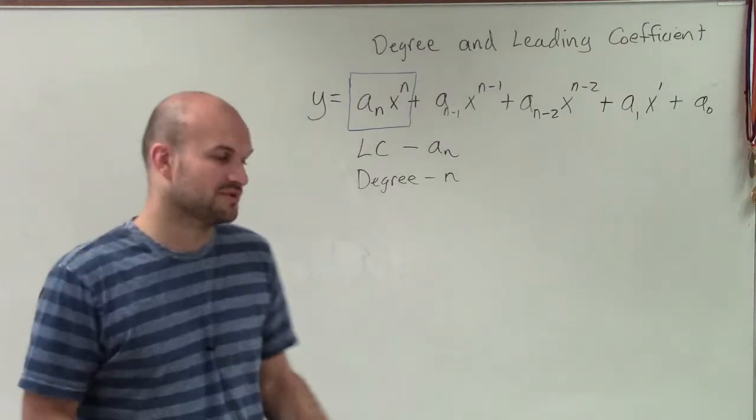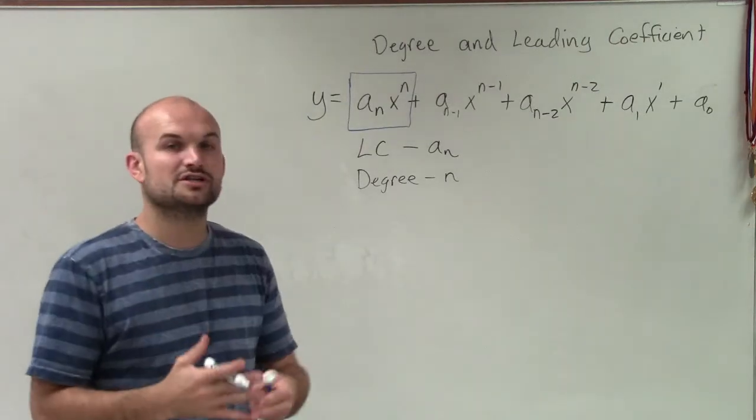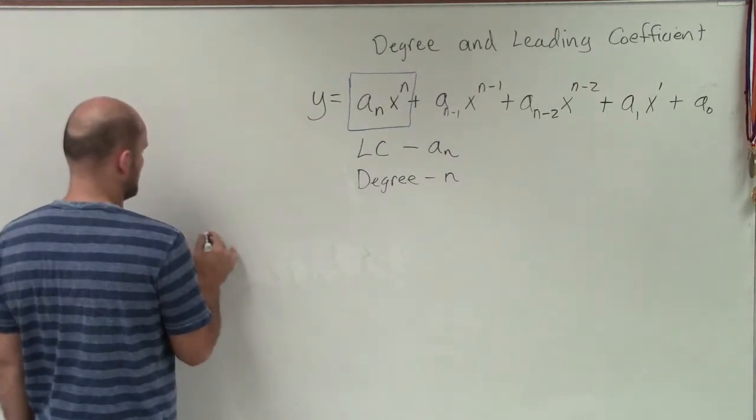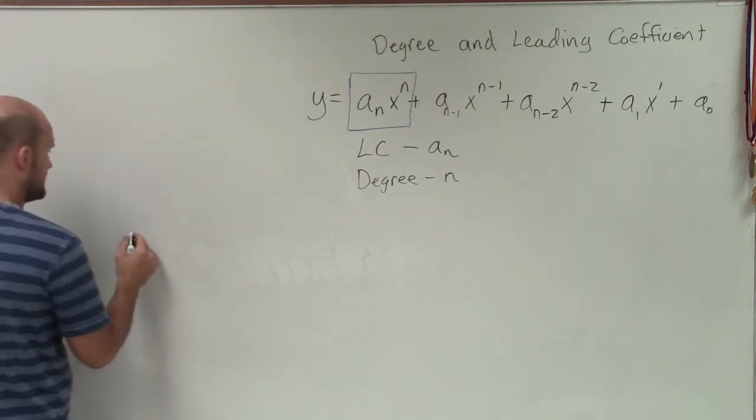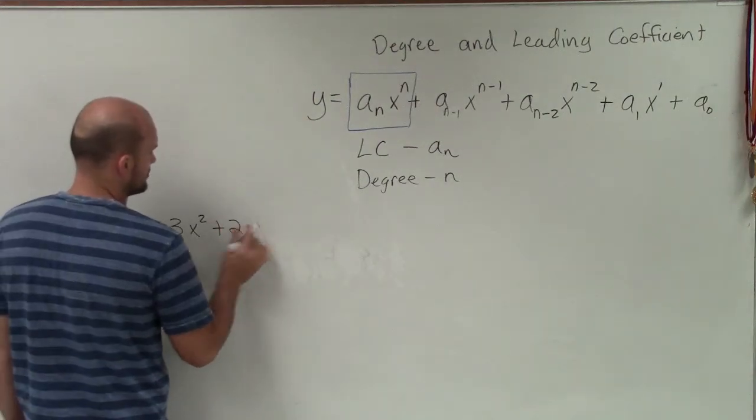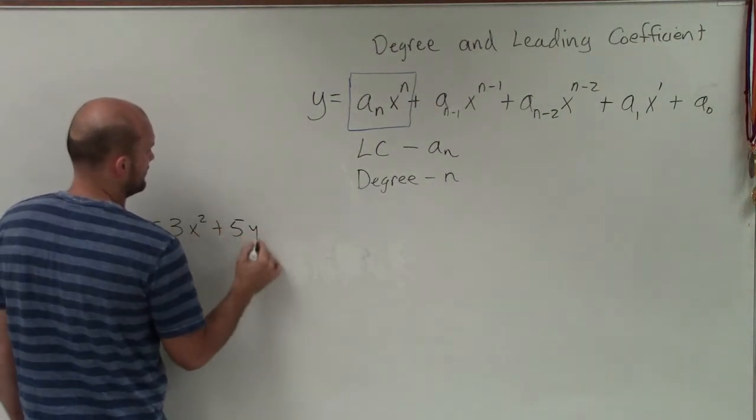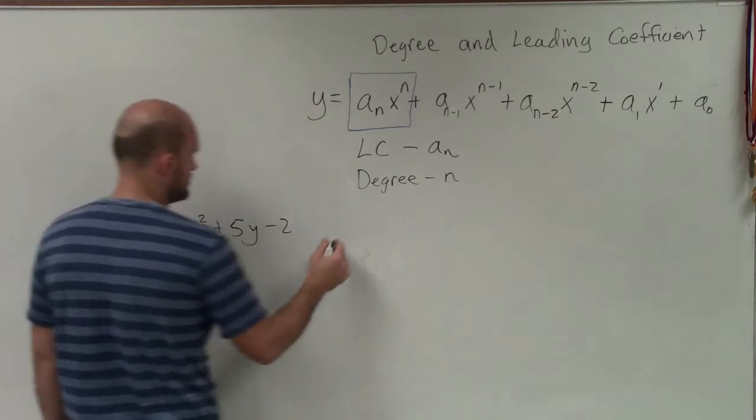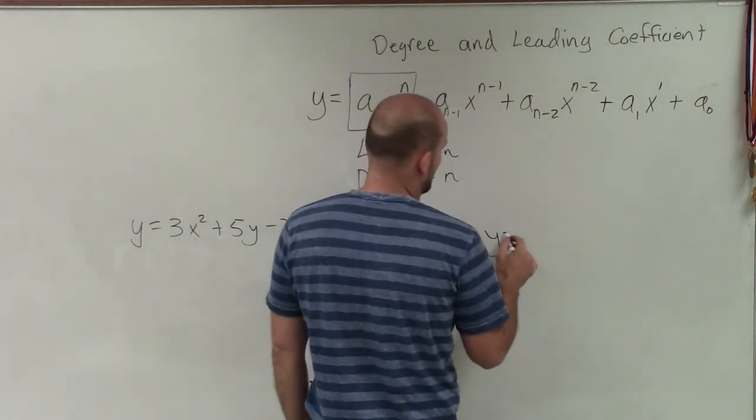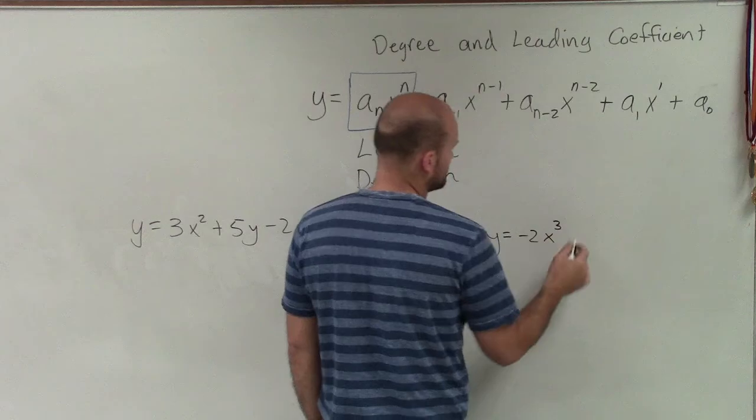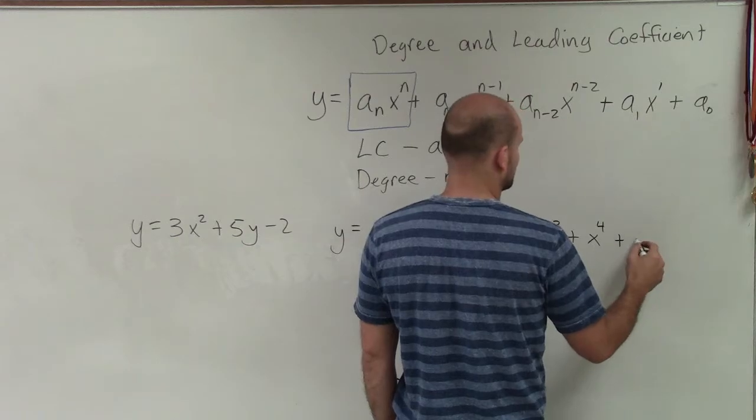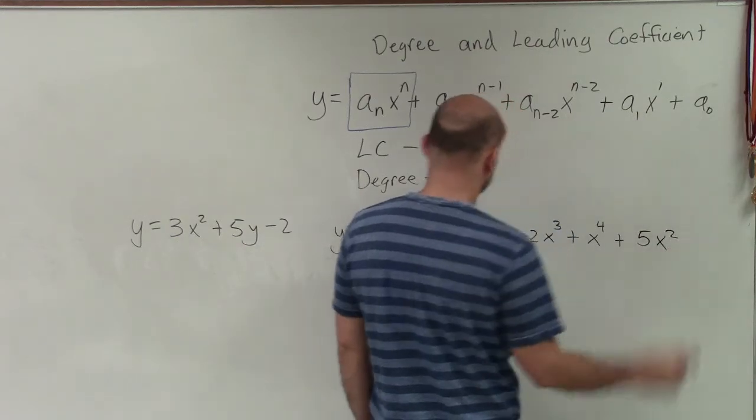So now what I like to do is just go through a couple examples where you can see how we're going to determine what the degree is and the leading coefficient of each function. So let's do a couple easy ones here. So I'll do 3x squared plus 5y minus 2. y equals negative x to the fifth. And y equals negative 2x cubed plus x to the fourth plus 5x squared.